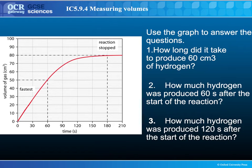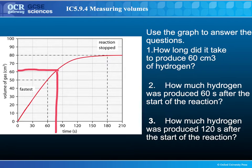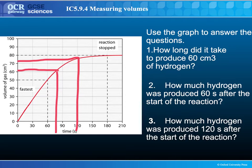You need to be able to interpret these graphs. First question: how long did it take to produce 60 cubic centimetres of hydrogen? Taking information off the graph, it's somewhere between 75 and 80 seconds. How much hydrogen was produced after 60 seconds? That's 50 cubic centimetres. And how much was produced 120 seconds after the start? It's somewhere in the region of 75 cubic centimetres. You can also tell from this reaction when it has stopped — when the line is horizontal, which in this case is at 180 seconds.